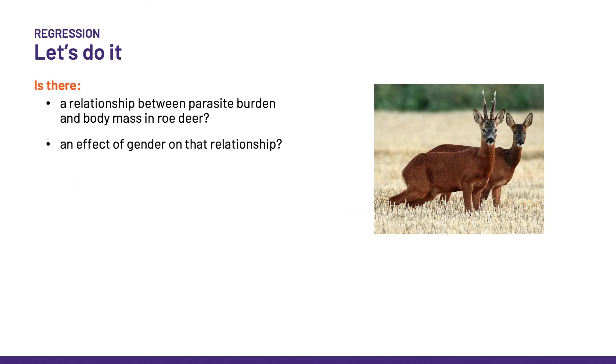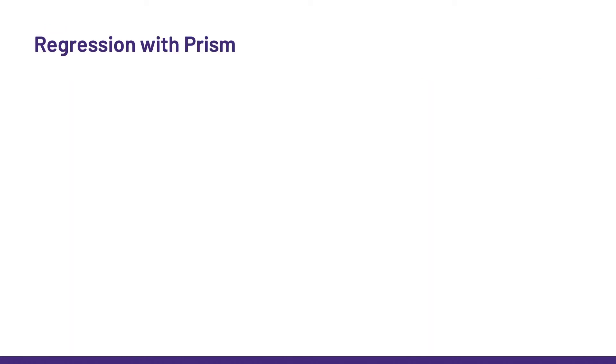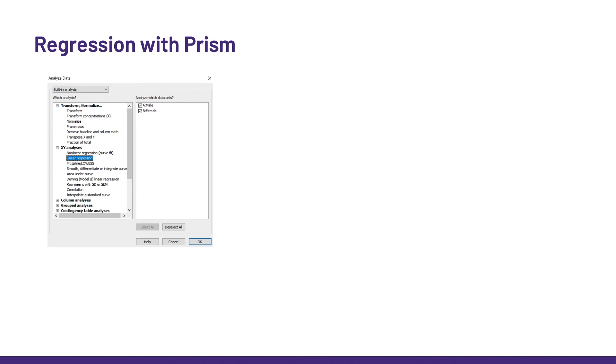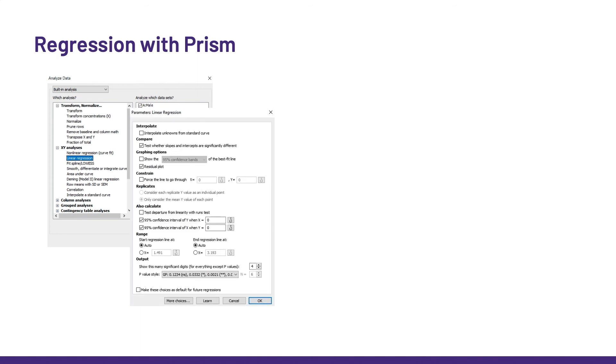So, let's do it. We are going to look at the relationship between parasite and body mass in males and females' raw deer. Even though, strictly speaking, regression is about a fixed x and random y, the technique is routinely applied to a wider range of quantitative variables. As always, to do stats in PRISM is really easy. We choose linear regression, of course, and then we click compare for the comparison between the two slopes and residual plot to check the assumption for normality.